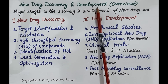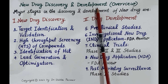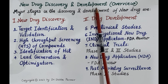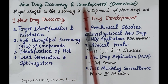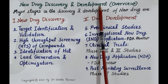It costs a pharmaceutical company around 1.5 billion US dollars and 10 to 15 years of research and development by hundreds of research teams. During discovery of a new drug, thousands of potentially active compounds — around 5,000 to 10,000 compounds — are screened, and unsuitable compounds are rejected at each step.